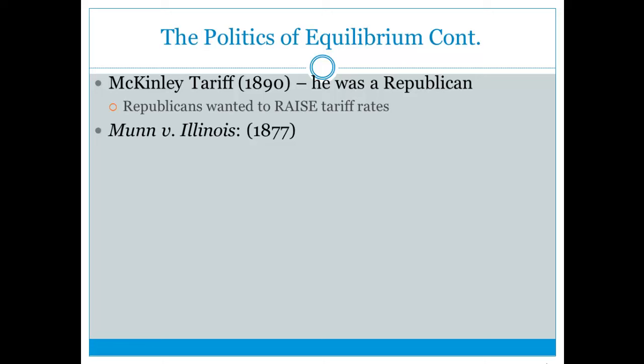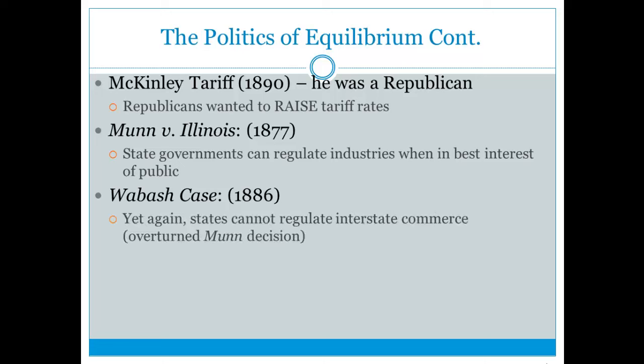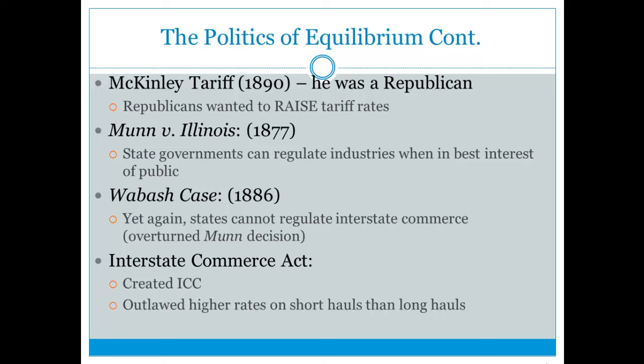In 1877, Munn v. Illinois was a Supreme Court case saying state governments can regulate industries when it is in the best interest of the public. This was overturned nine years later by the Wabash case in 1886, which said states cannot regulate interstate commerce. That led to the Interstate Commerce Act, which created the ICC and outlawed higher rates on short hauls than long hauls for railroads.